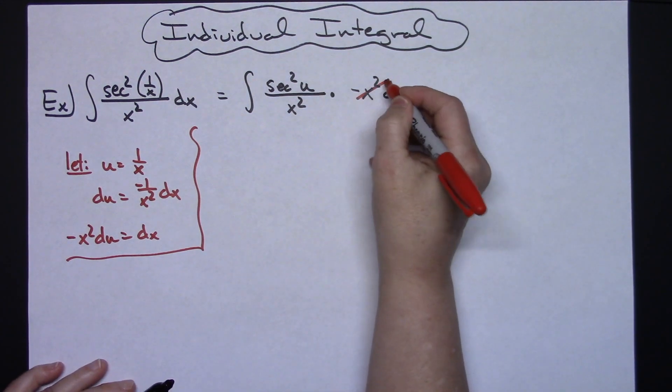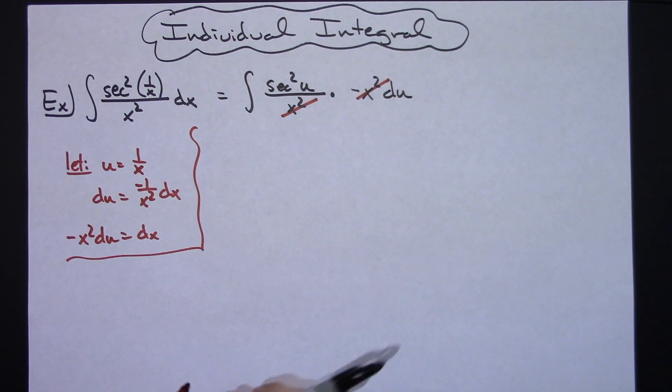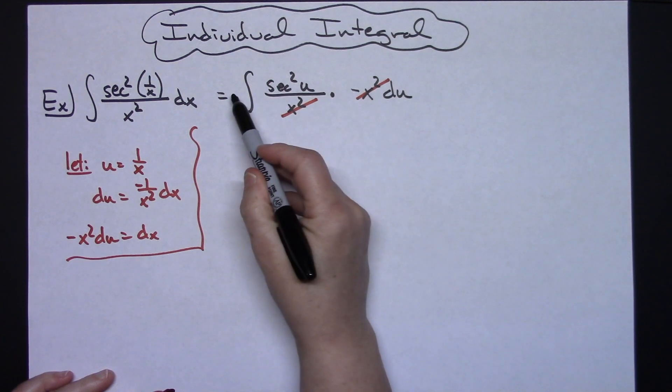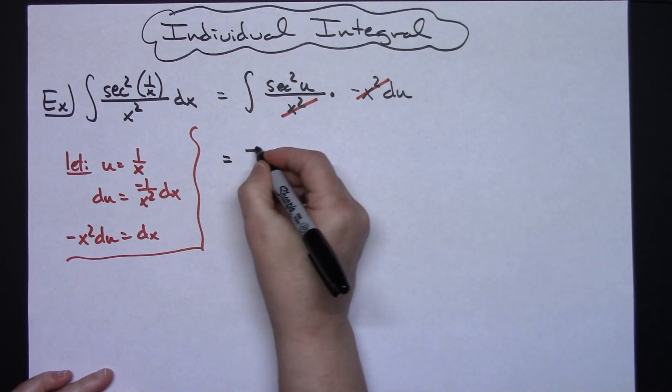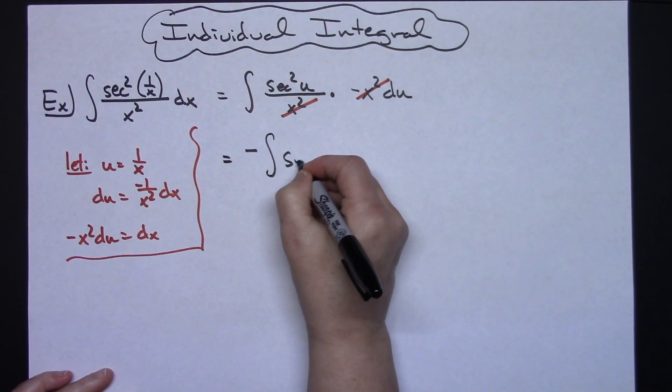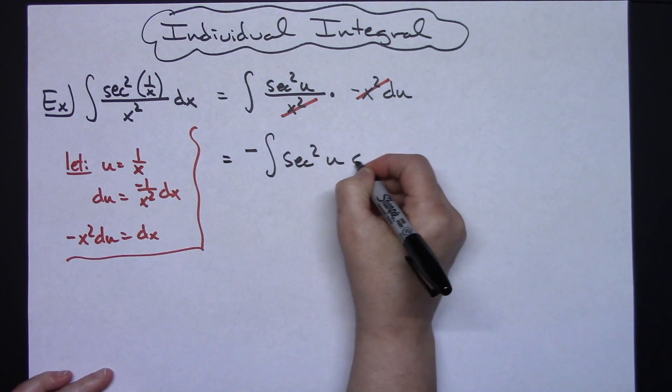That's going to then allow us to cross out those x squareds. And we can take this negative and pull it out in front. So we'll have negative the integral of secant squared u du.